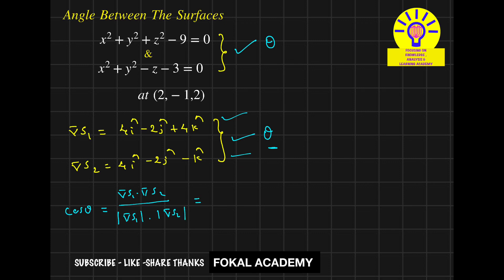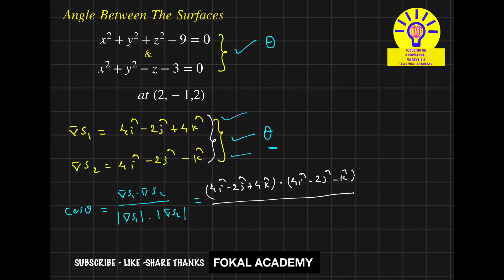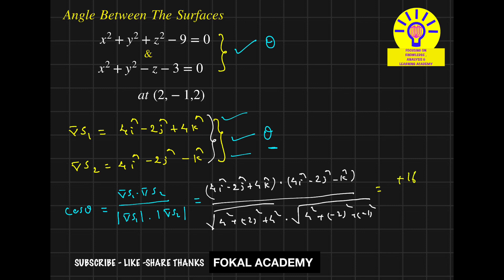Now apply the dot product between these two vectors: (4i − 2j + 4k) · (4i − 2j − k), divided by the product of their magnitudes. The magnitude of Del S1 is √(4² + (−2)² + 4²), and the magnitude of Del S2 is √(4² + (−2)² + (−1)²). Simplifying, the numerator gives 16 + 4 − 4 = 16, and the denominator gives 6√21, which simplifies to 8 upon 3√21.